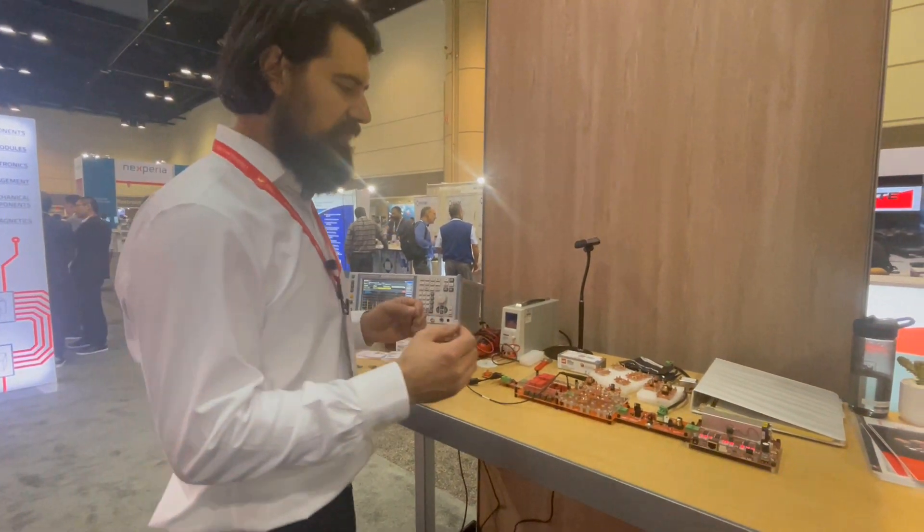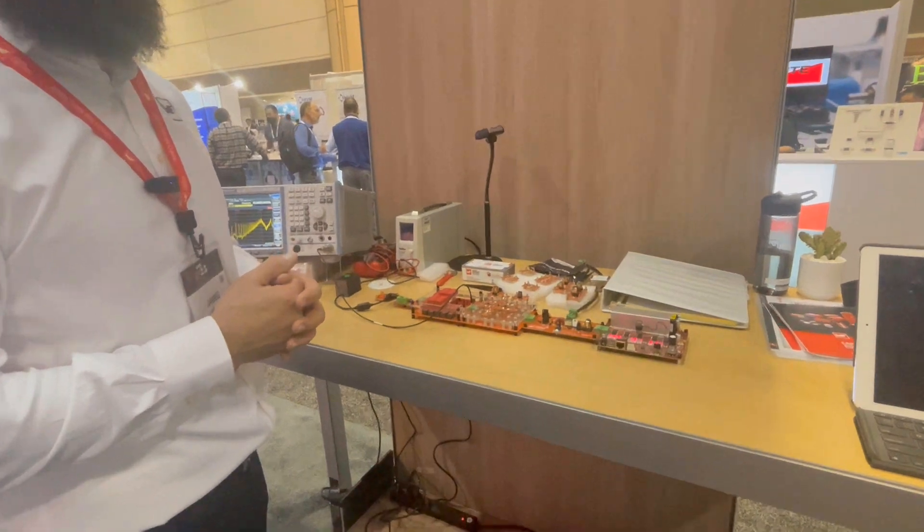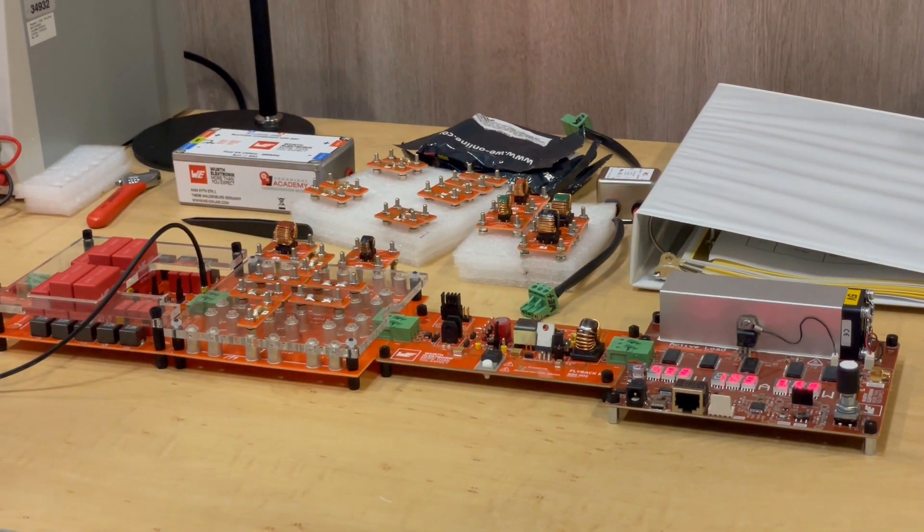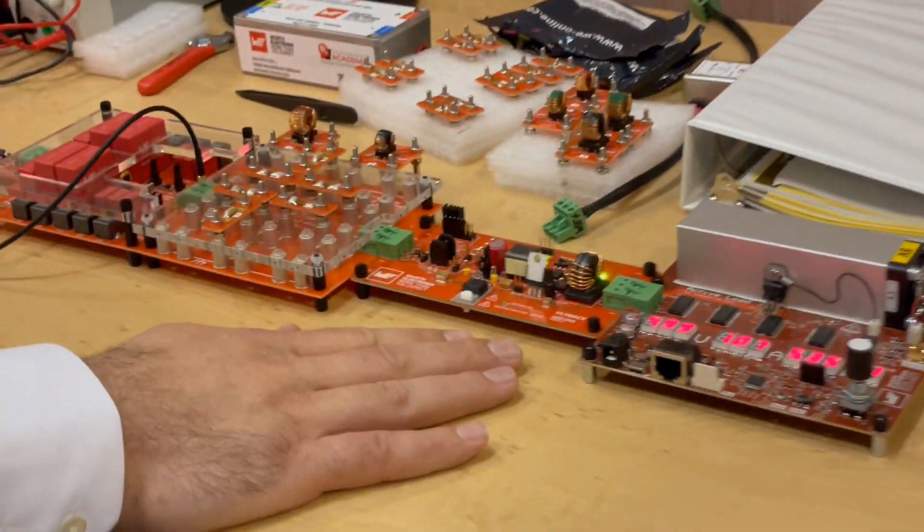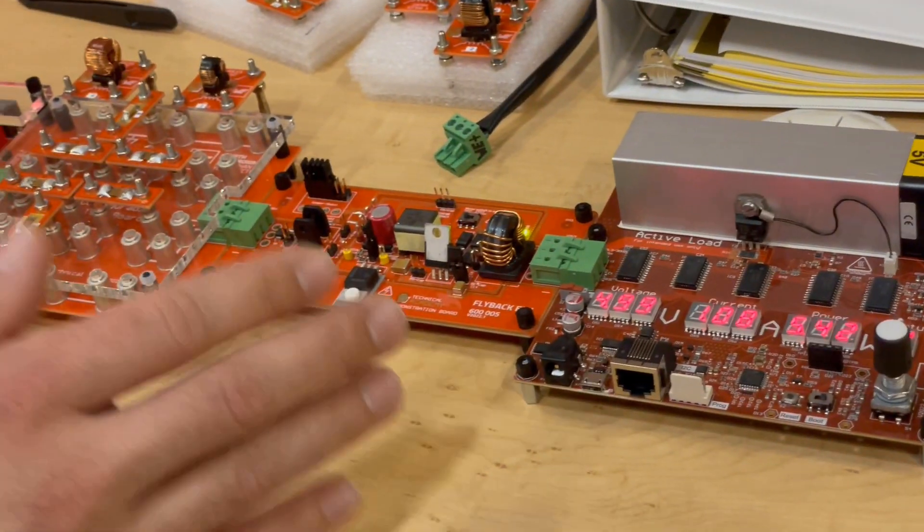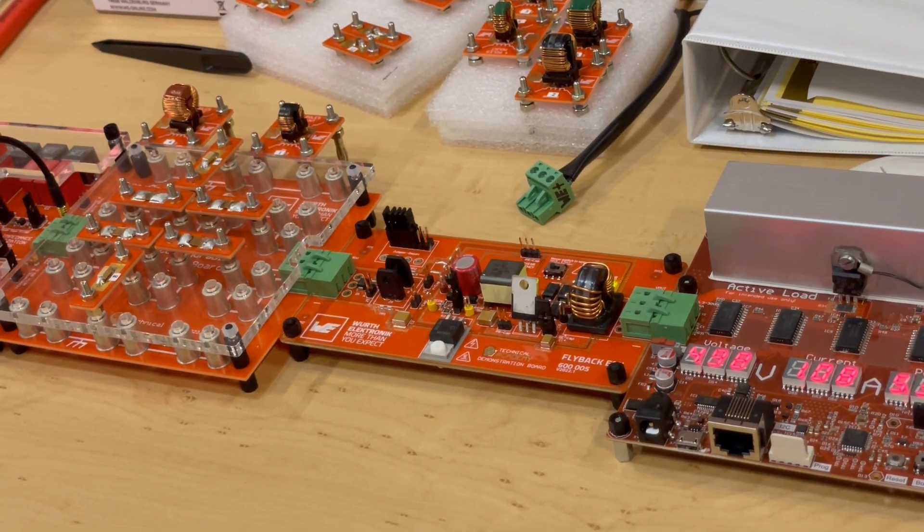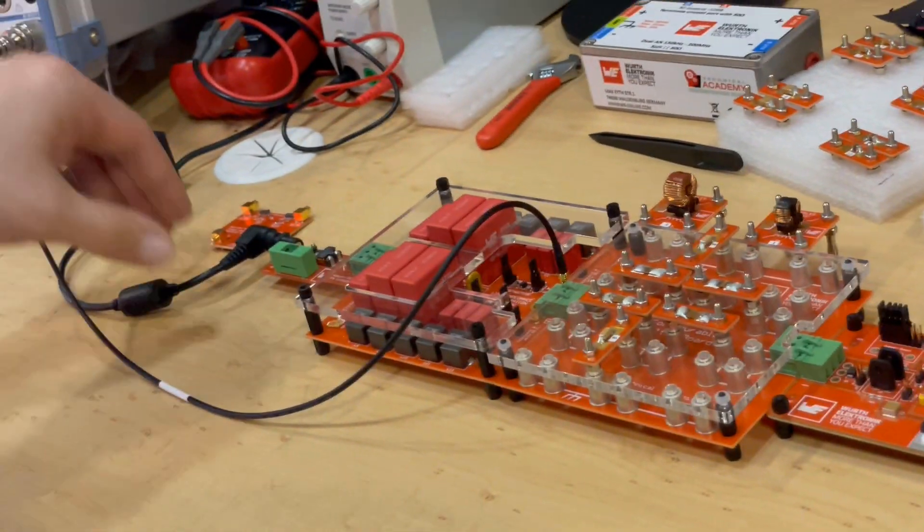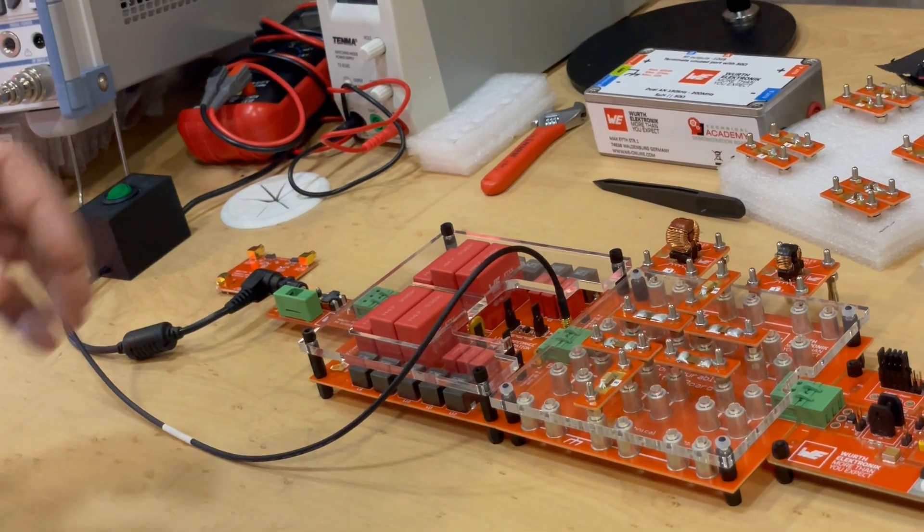So with the board that we have here, this is for training that we offer to customers to talk about the fundamentals of EMC and how to solve them. We have the main board as a flyback converter, which is having problems with EMI, which is good for this demo, so then we can talk about how to fix this. And it's basically powered by a laptop power supply, so it's safe for showing to customers or at trade shows.